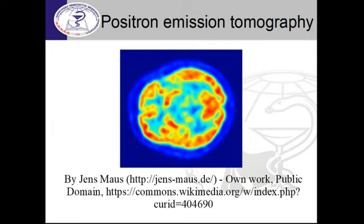PET allows us to visualize the functional activity of an organ — in this case the brain — but also the liver, kidneys, or muscles. Any tissue that has metabolic processes related to its major function will be depicted and visualized properly. Bone tissue forming the skull is still alive and functional, but barely visible in PET scans.